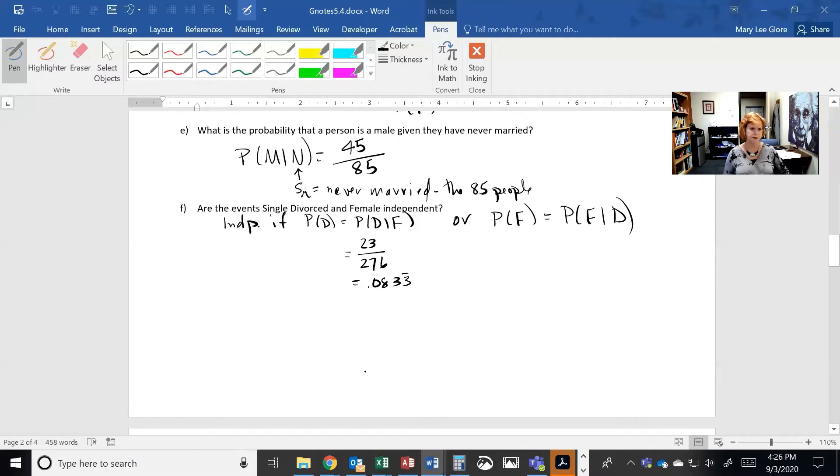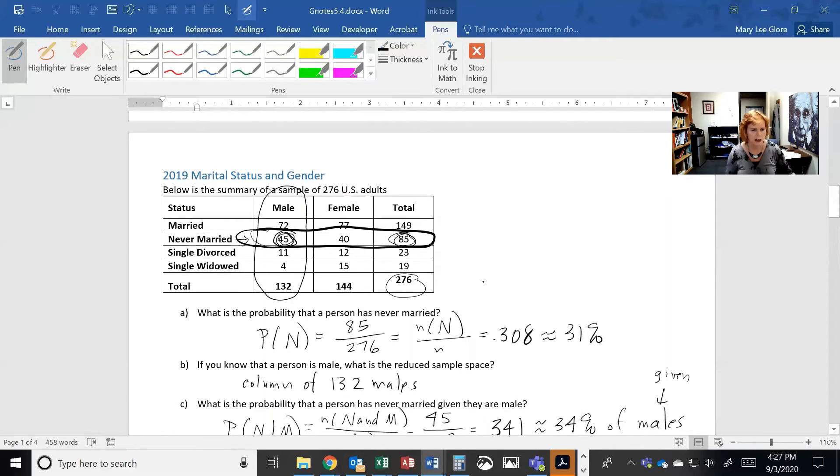Okay, the probability of divorce given female. All right, so now I'm going to limit myself. This guy, so now my reduced sample space are all the females. So I'm only going to look at the females, which is going to be that second column. All right, I've got 144 females, and how many of those are divorced? 12. So 12 out of 144.